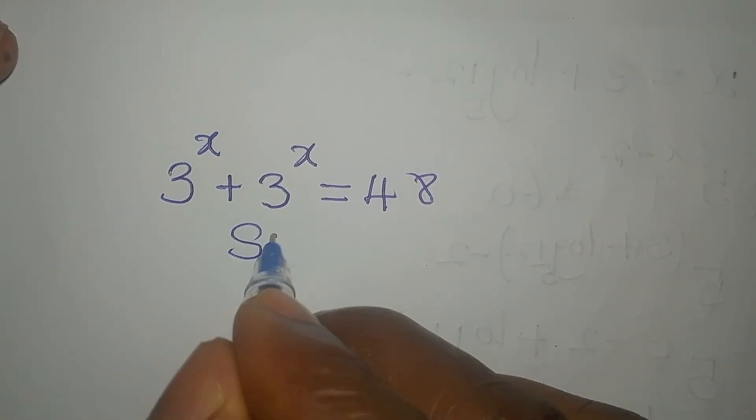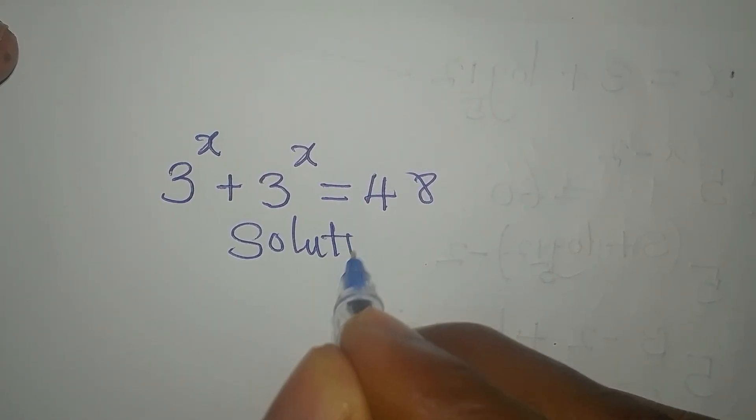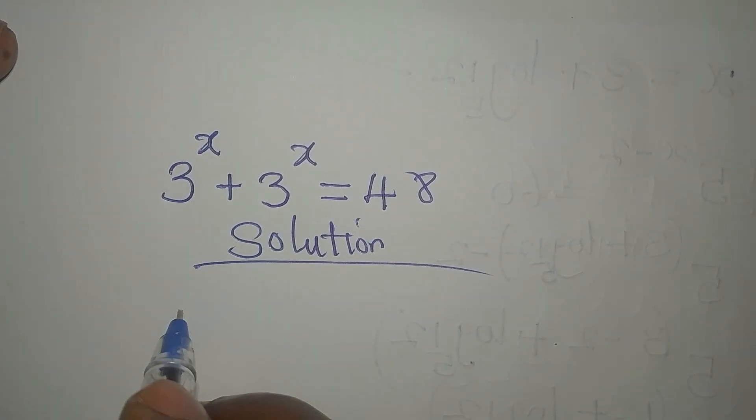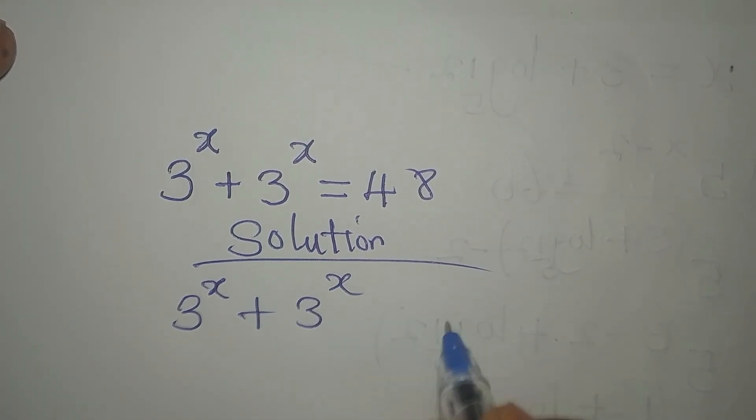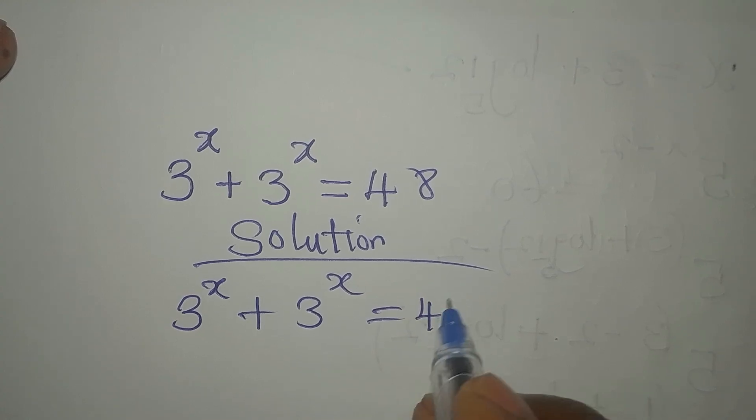Hi everyone, okay here is what we have before us: 3 to the power of x plus 3 to the power of x equals 48.